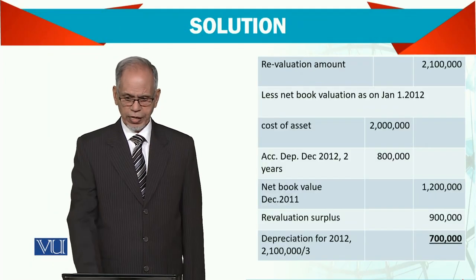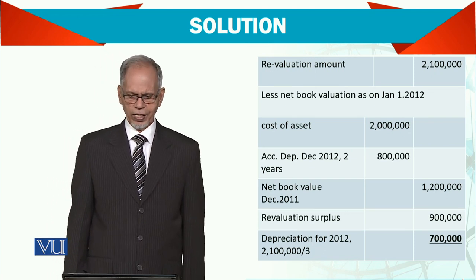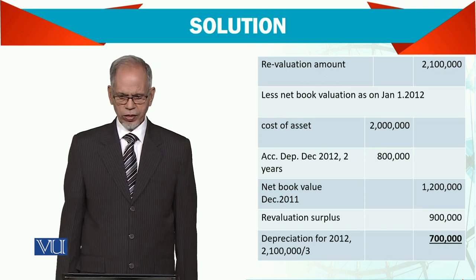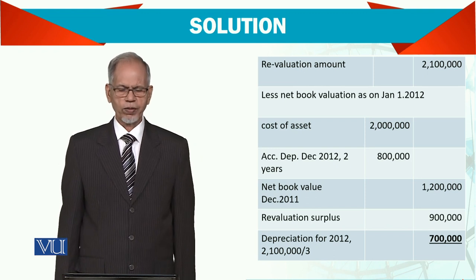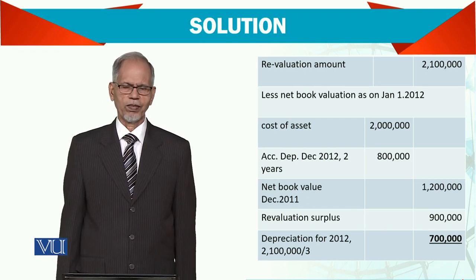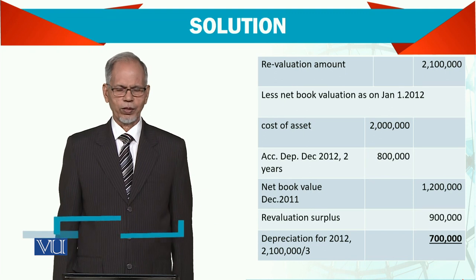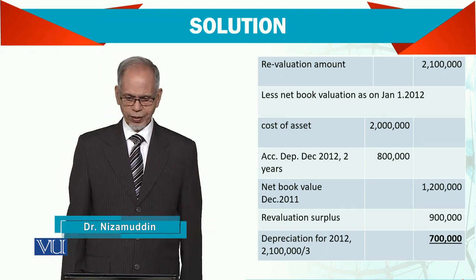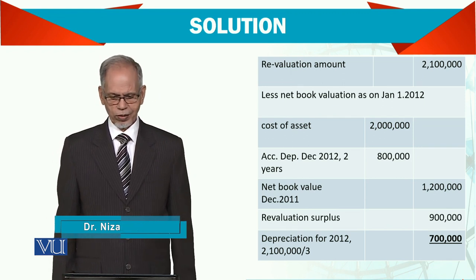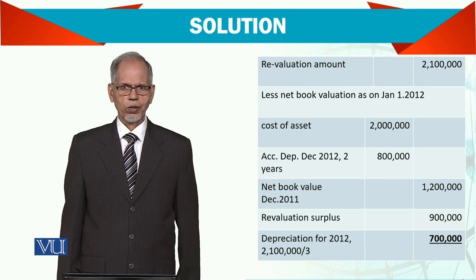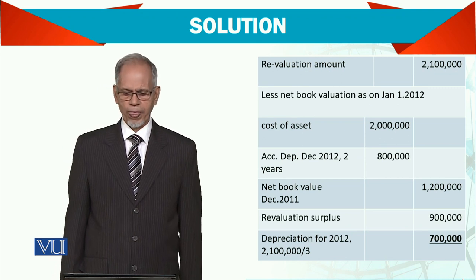Let's see how this revaluation will be reported in accounts. Revaluation is now 2.1 million, less net book value as on 1st January 2012. We need 2 years depreciation, that is 800,000, and the net book value at end of 2011 comes to 1.2 million. So the difference between 2.1 and 1.2 gives a revaluation surplus of 900,000.